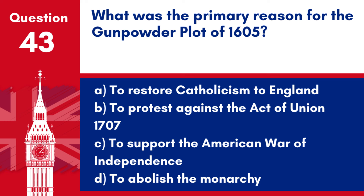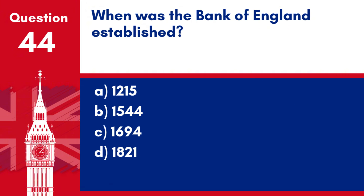Answer: a. To restore Catholicism to England. The plot aimed to assassinate King James I and restore a Catholic monarch to the throne.